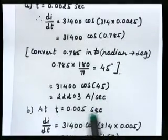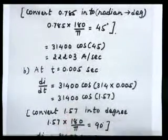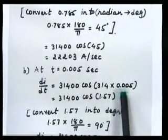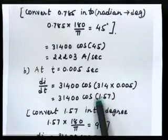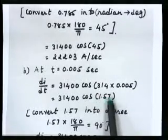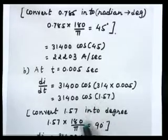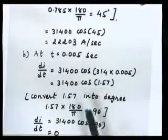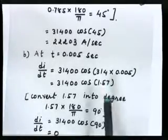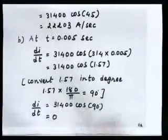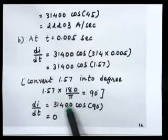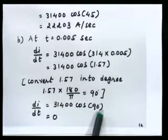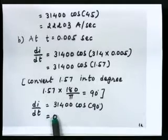For part b, t = 0.005 s. Put t = 0.005 into the equation. This value is again in radian, so convert it to degree by multiplying by 180/π — the answer is 90°. Put 90° into the equation: di/dt = 31400 cos(90°). Since cos(90°) = 0, di/dt = 0 for this instant.